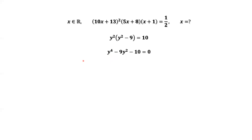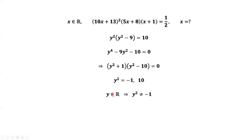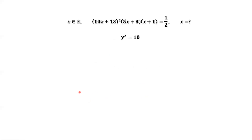Factoring the left-hand side, we have two roots for y²: y² equals −1 or y² equals 10. Because y is a real number, y² cannot be negative 1. Therefore, y² equals 10 only. Taking the square root of both sides, we have y equals ±√10.